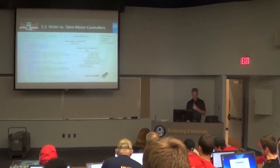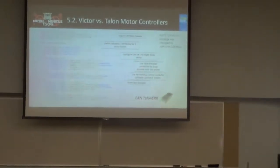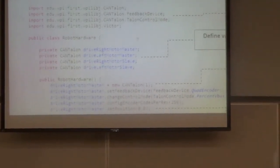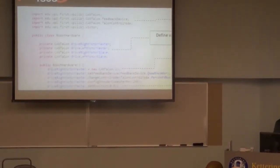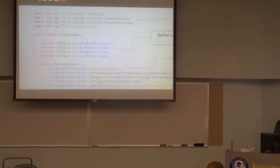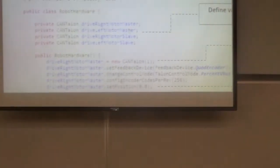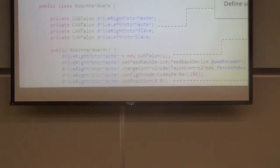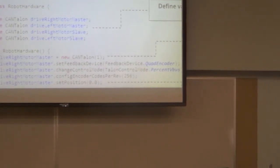There are two main options for motors: Victors and Talons, which are the most common. We'll look at what it takes to write code to control the motors using CAN Talon motors. With CAN Talons, you can set up one motor as a master and another as a slave, so the slave will follow the same command as the master.